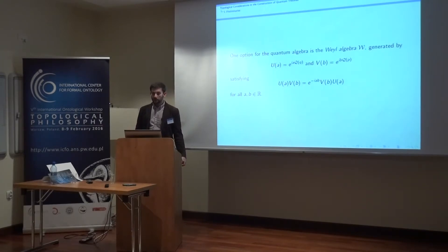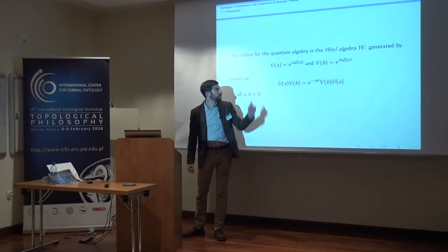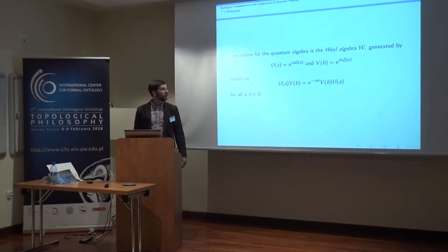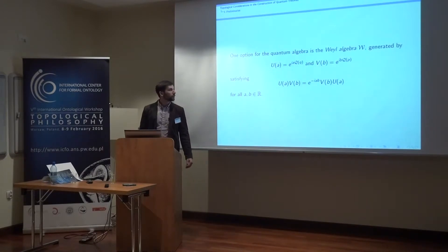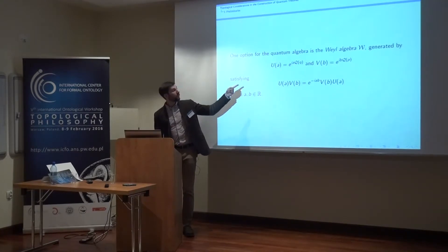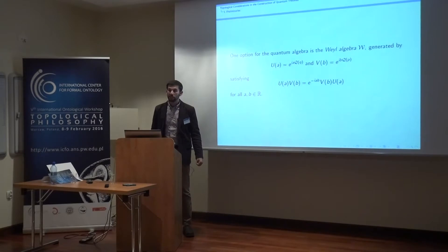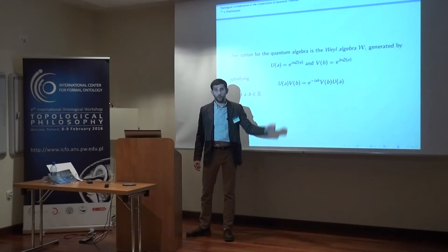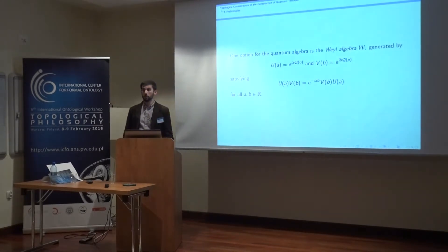One standard option for this quantum algebra is what's known as the Weyl algebra, which we'll call W. It's generated by functions u(a) and v(b), where a and b are real numbers — exponentials of position and momentum, which is what keeps them bounded. When we use these functions u and v, we get a particularly simple form of the commutation relations. One can show that this equation is formally equivalent to the canonical commutation relations on all of our observables.